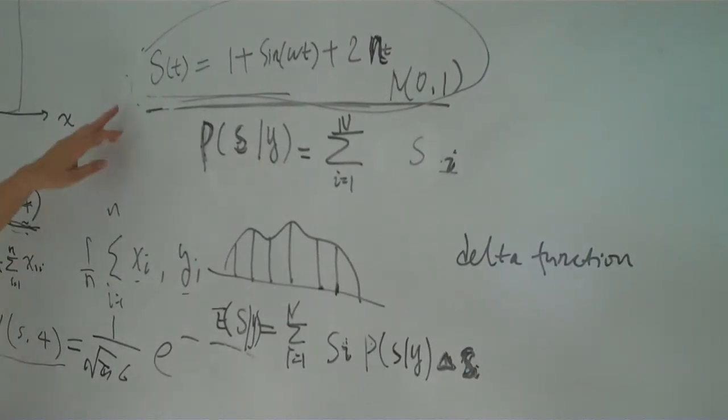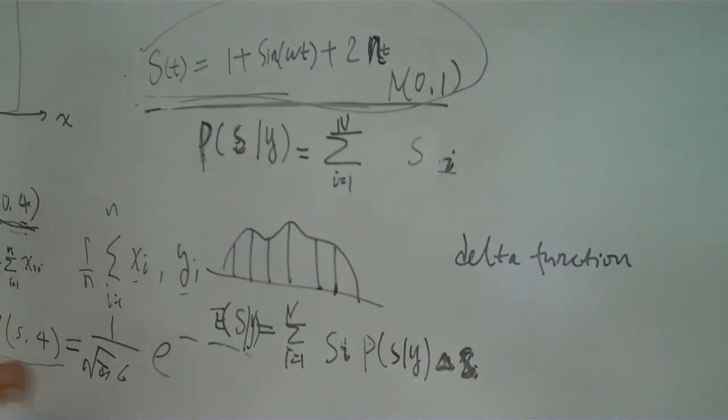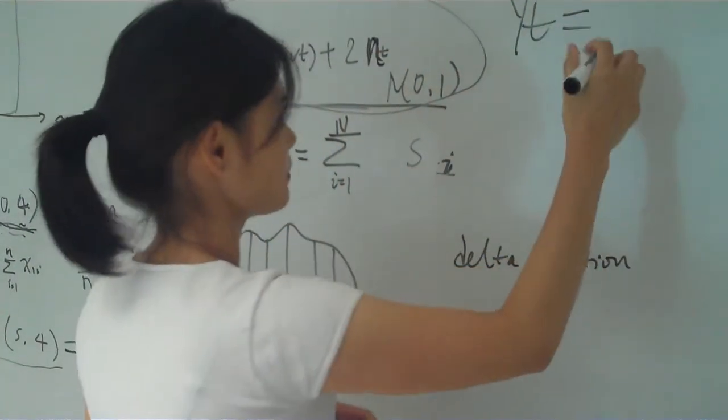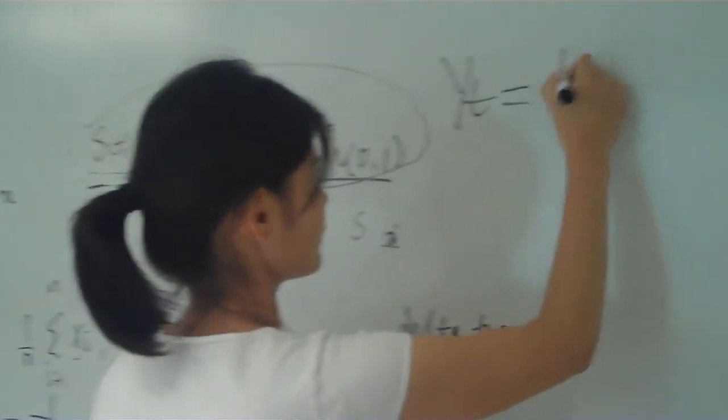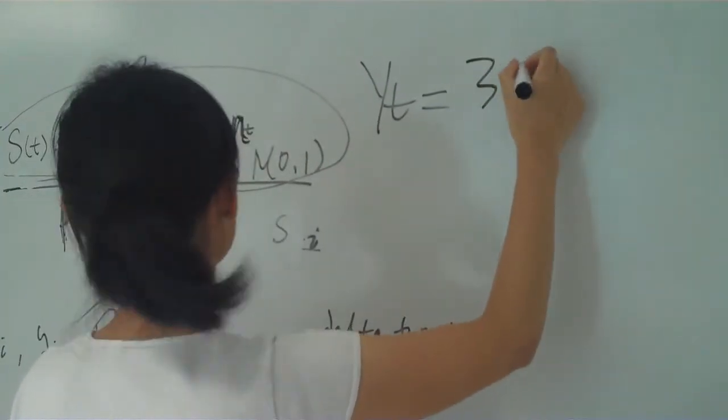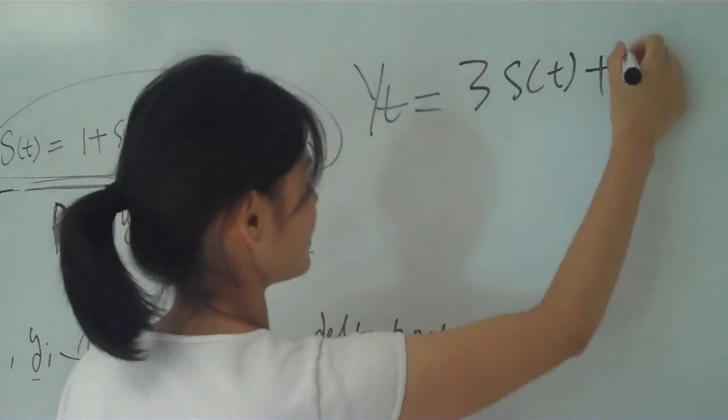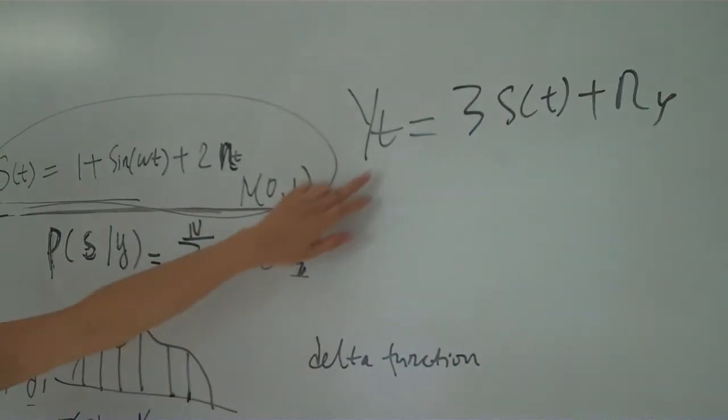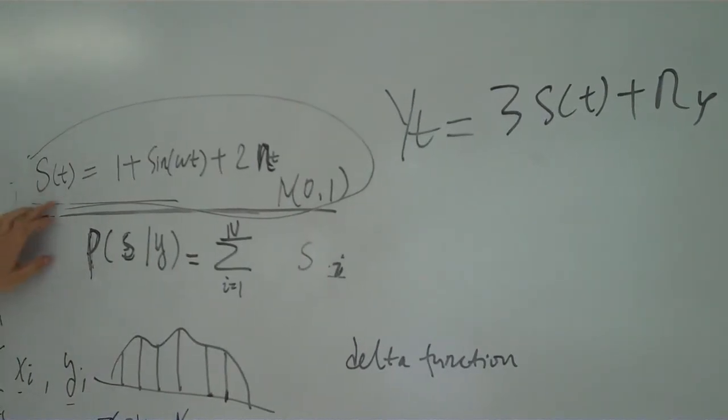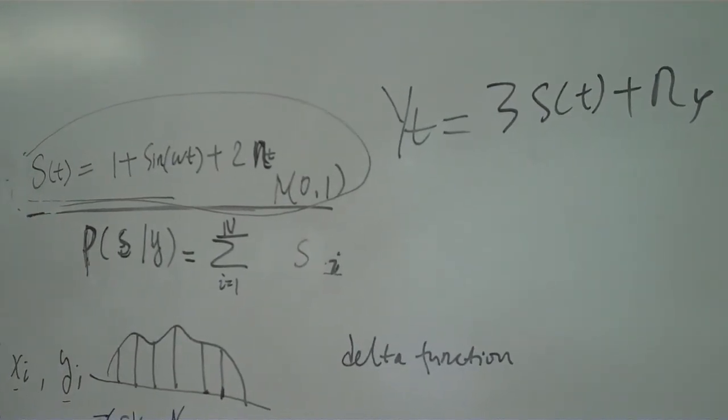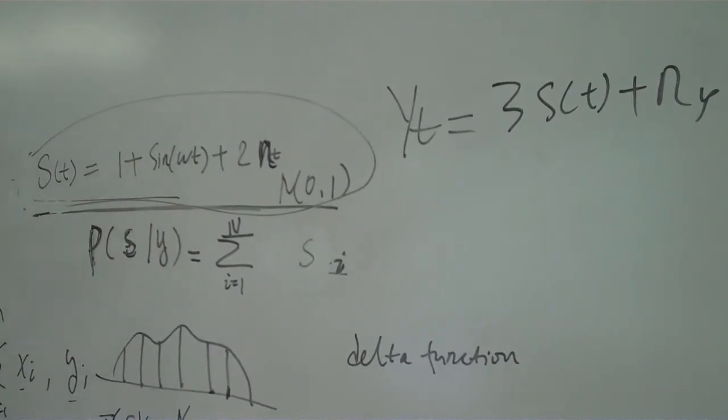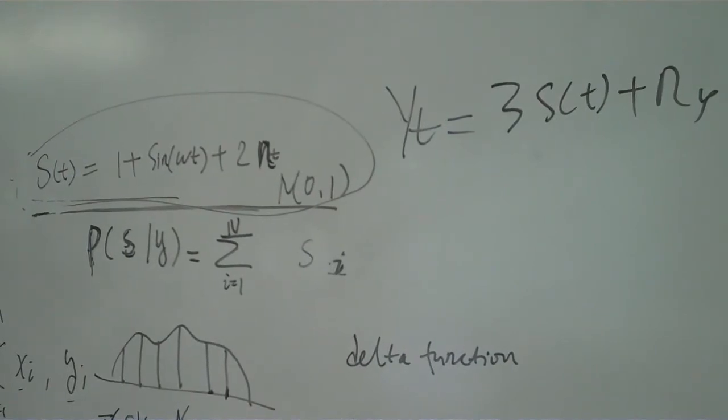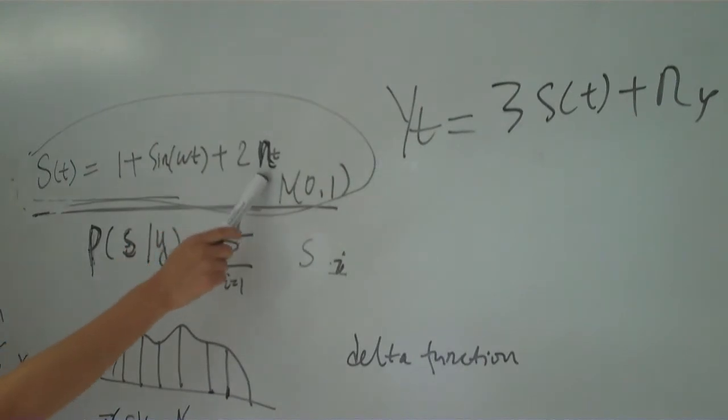This is just the equation and maybe the observation is some kind of like K3ST plus another Gaussian distribution. This is the observed data. This is how the underlying data evolves. And you have that SIN, sine function of W? Yes, this is SIN. So a constant and then something varying like a sine plus that Gaussian one. Nt is Gaussian? Nt is Gaussian, yes. It's a normal distribution.